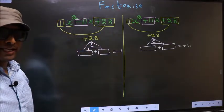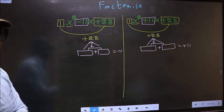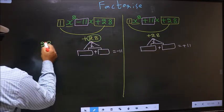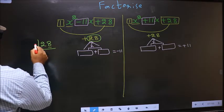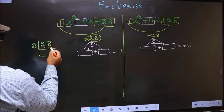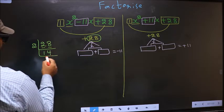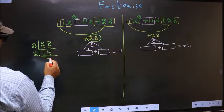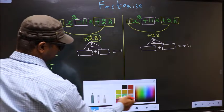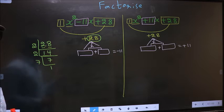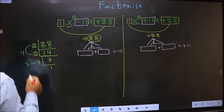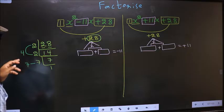To get those two numbers, we should take the LCM of 28. The last digit 8 — we take 2. 2 times 1 is 2, and 2 times 4 is 8. Then 14: 2 times 7 is 14. Now 7 is a prime number, so 7 times 7. The two numbers should be 2 into 2, which is 4, and the second number is 7. Four plus 7 is 11, and 4 into 7 is 28.